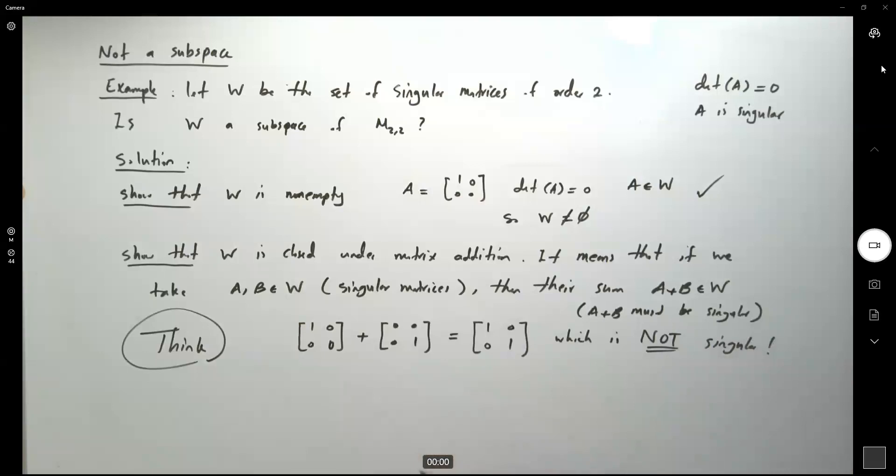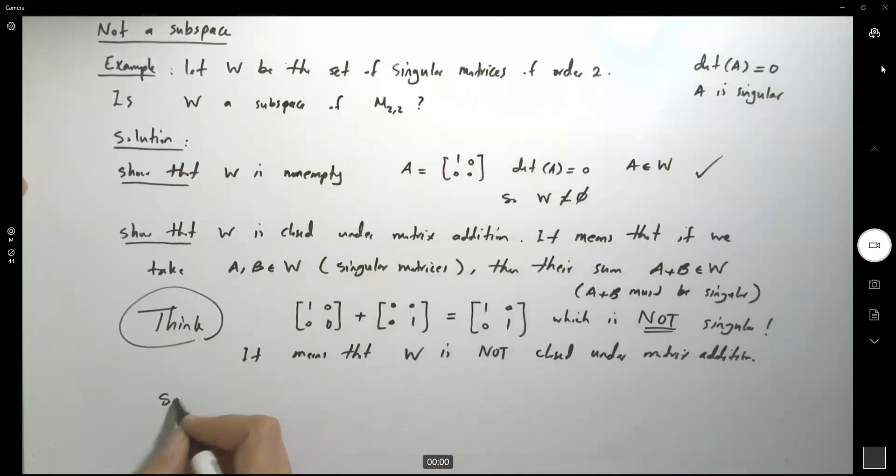So what is the meaning of this? It means that W is not closed under matrix addition. So what is our conclusion? W is not a subspace of M2x2.